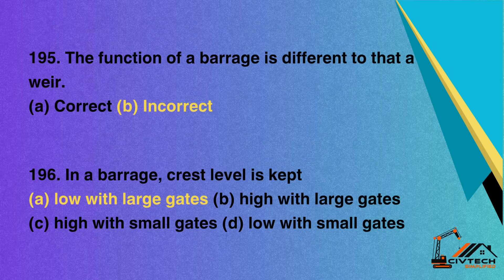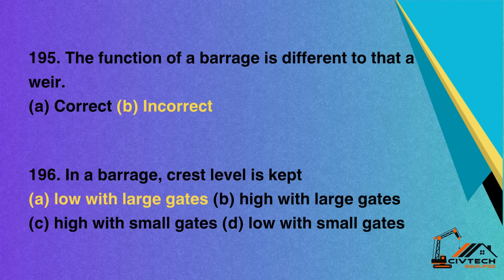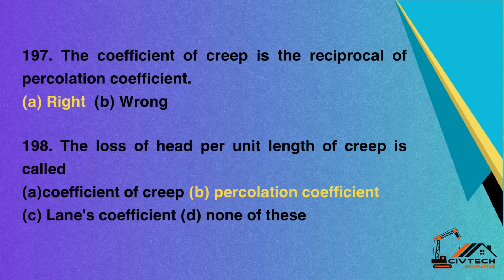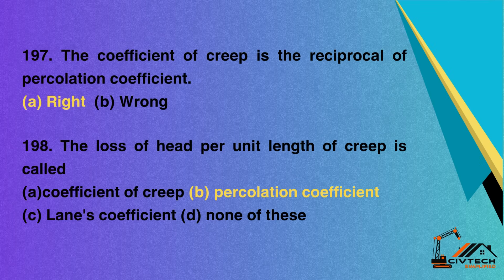Question 195: The function of a barrage is different to that of a weir — A. Correct; B. Incorrect. Correct option: B. Incorrect. Question 196: In a barrage, crest level is kept — A. Low with large gates; B. High with large gates; C. High with small gates; D. Low with small gates. Correct option: A. Low with large gates. Question 197: The coefficient of creep is the reciprocal of percolation coefficient — A. Right; B. Wrong. Correct option: A. Right. Question 198: The loss of head per unit length of creep is called — A. Coefficient of creep; B. Percolation coefficient; C. Lane's coefficient; D. None of these. Correct option: B. Percolation coefficient.